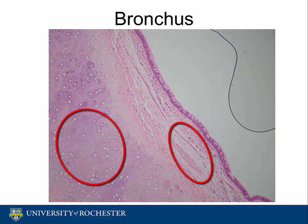It is within a functional context that we can also come to understand the importance of the type 1 pneumocytes, which facilitate diffusion, as well as the type 2 pneumocytes, which facilitate the inflation of the lungs by producing surfactant. That concludes our review of the normal histology of the lung.